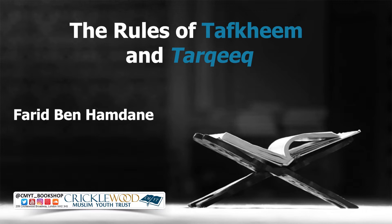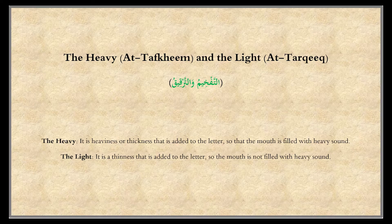Today we're going to carry on and talk about the letters which are heavy and which are light. In Arabic this is called Tafkhim and Tarkiq — the heavy is Tafkhim and the light is Tarkiq. The heavy means heaviness added to the letter, so the mouth is filled with heavy sound. The method of making the letter heavy is by elevating the deepest part of the tongue towards the roof of the mouth.